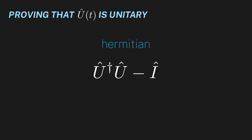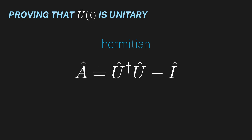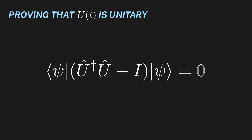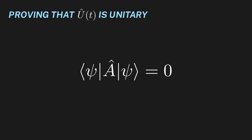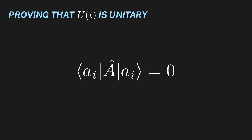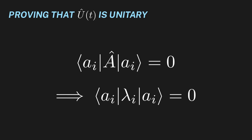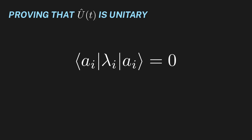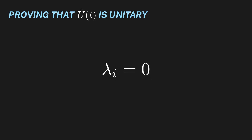Since this operator is Hermitian, we know it must have an orthonormal eigenbasis. Let's label this operator as A and elements of its eigenbasis as |aᵢ⟩. Going back to our equation and relabeling the sandwiched operator as A — since this must be true for any state — let's use one of its eigenvectors. A acting on its eigenvector gives us the eigenvalue, which we can pull out. The remaining inner product of the orthonormal eigenvector equals one. Therefore the eigenvalue equals zero, and this must hold for all eigenvectors, so all eigenvalues of A must be zero.